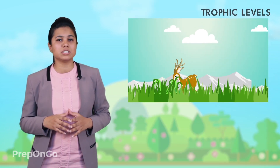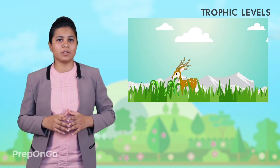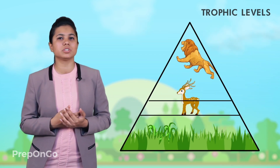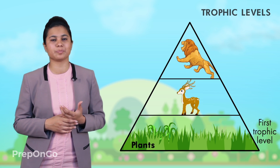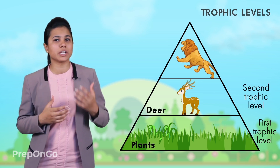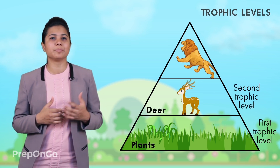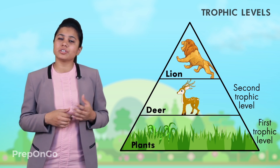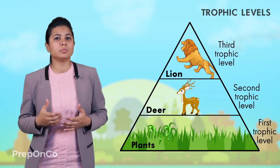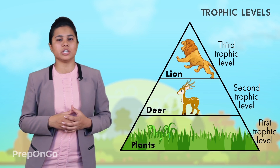Some food chains have fewer trophic levels. For example, in the case of a forest ecosystem, there are only three trophic levels. Grass or plants, which are the producers, form the first trophic level. The deer is the primary consumer and forms the second trophic level. The lion, which is the tertiary consumer, forms the third trophic level. The secondary consumer is not present in this food chain.